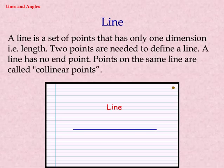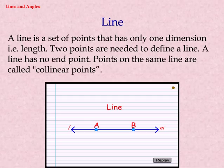Line. A line is a set of points that has only one dimension, that is length. Two points are needed to define a line. A line has no end point. Points on the same line are called collinear points.